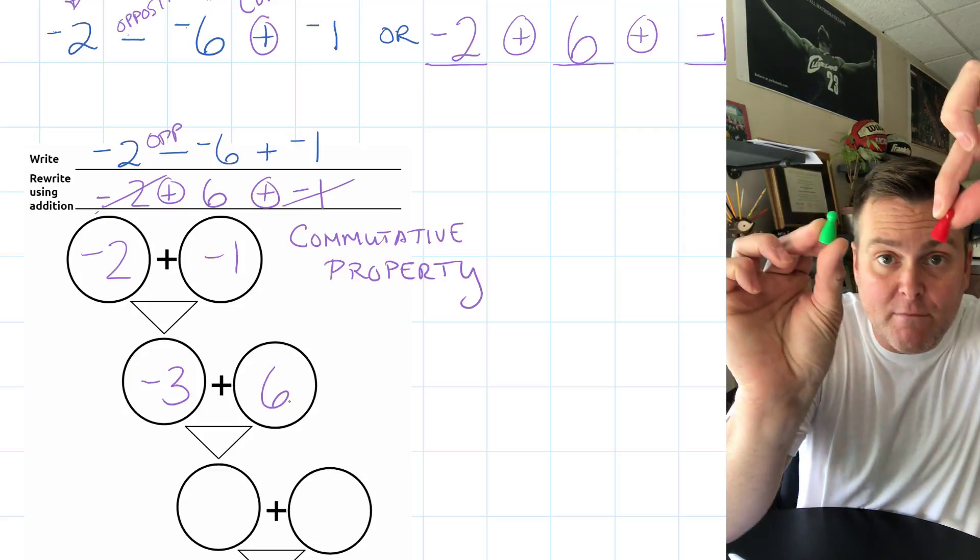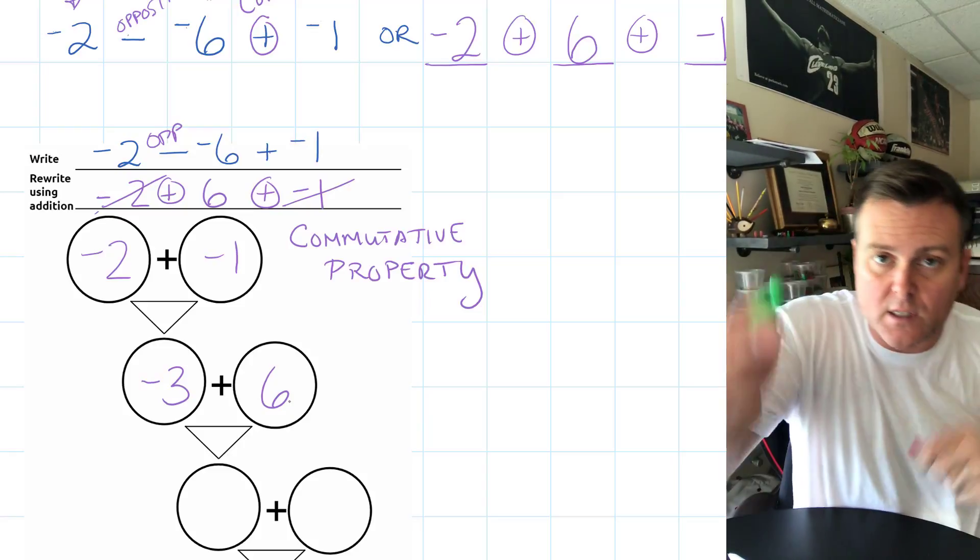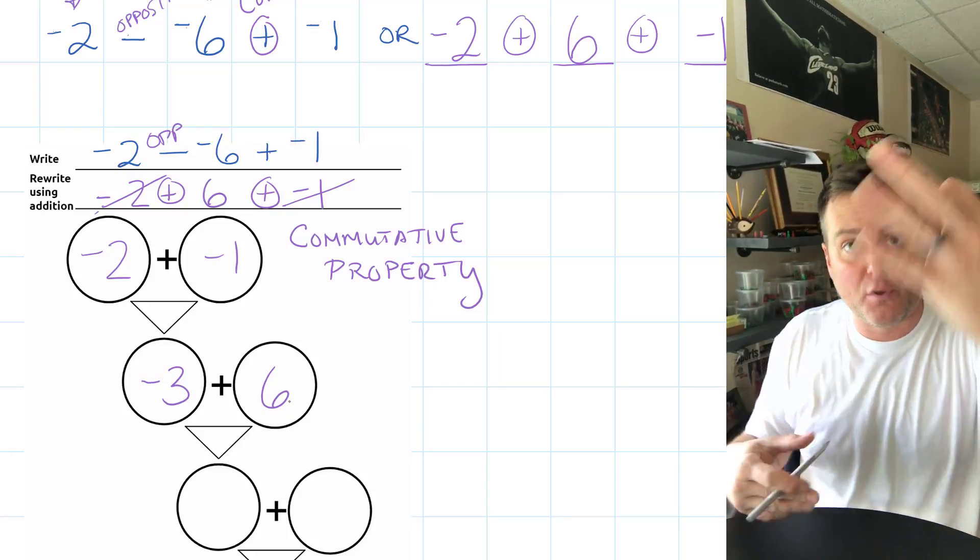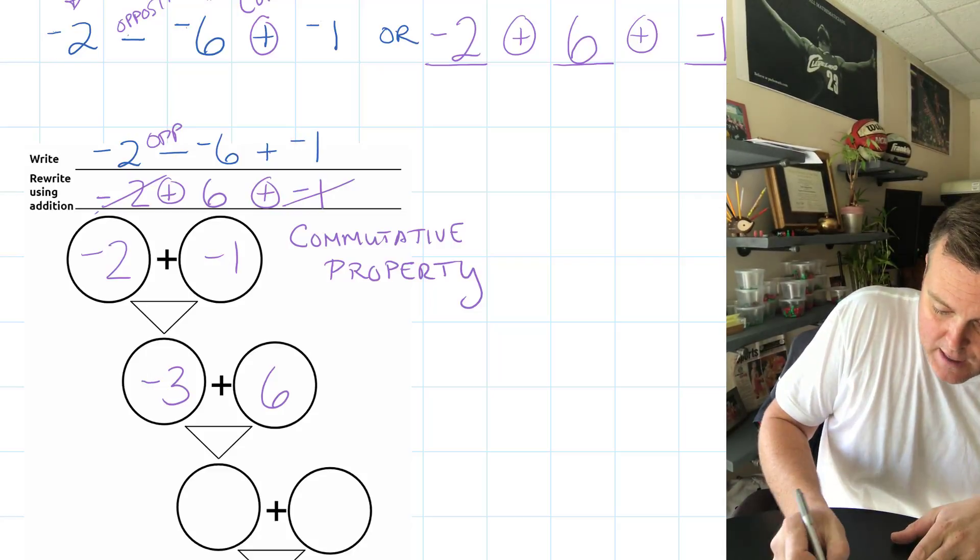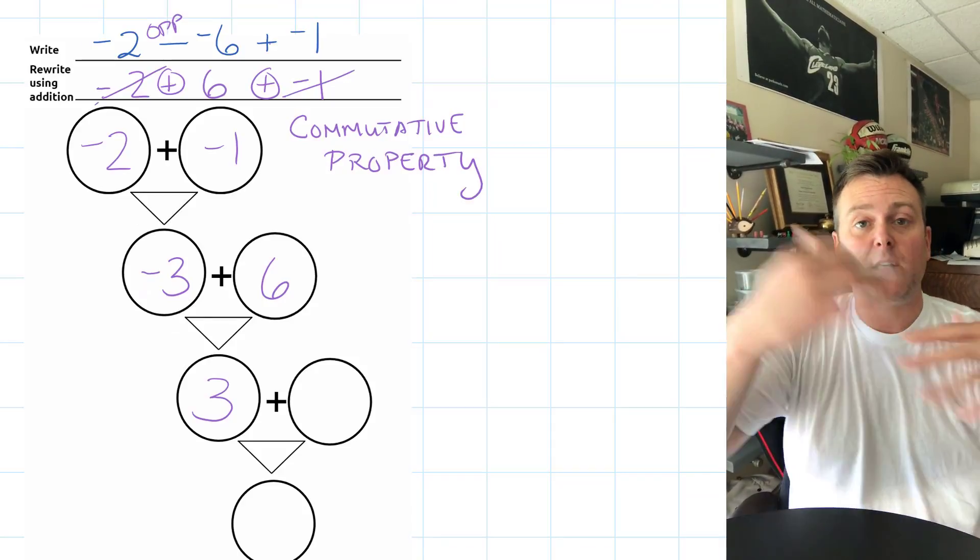So what do you have more of? We've got six of these, we've got three of these. There's definitely more of these, and if you went ahead, had them, and you canceled them out, you'd be left with three positive pawns, and that's going to be your answer.